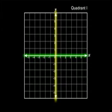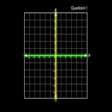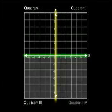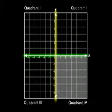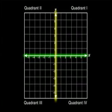The other quadrants are labeled counterclockwise: quadrant two, quadrant three, and quadrant four. These are the four quadrants of the coordinate plane. They are normally labeled using Roman numerals.